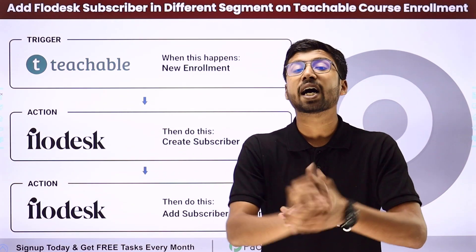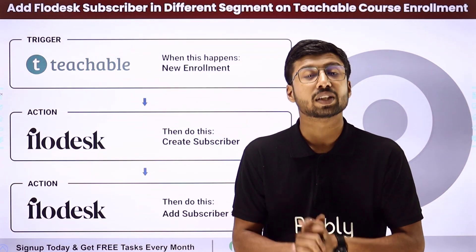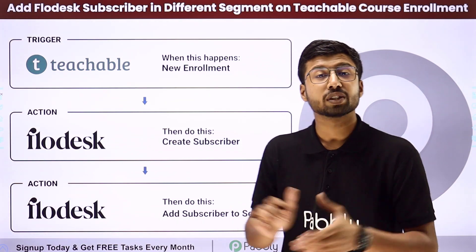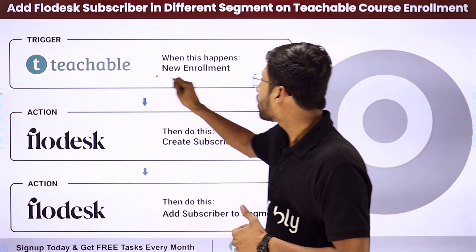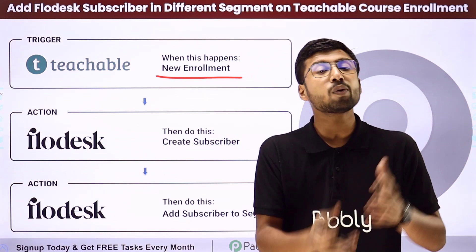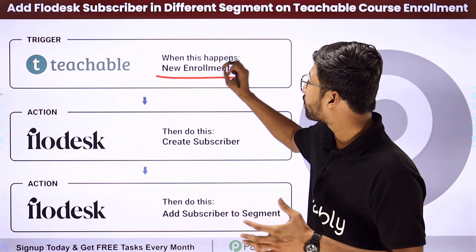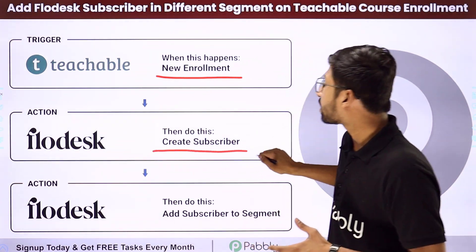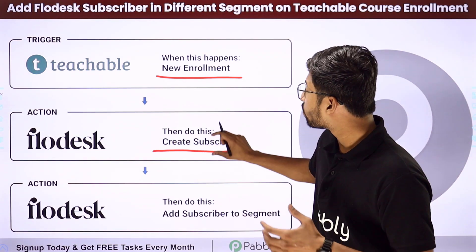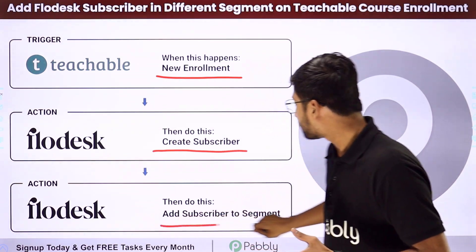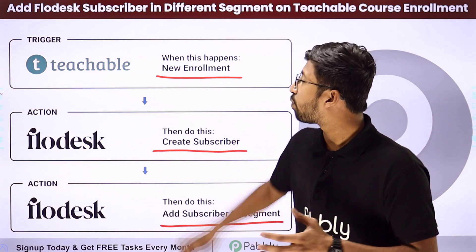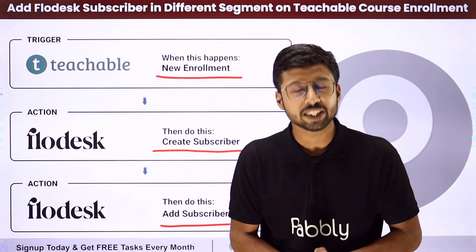You can automate this complete process with the help of Pabbly Connect. We are going to set up an automation so that whenever a new enrollment happens in your Teachable account, automatically that student will be added as a subscriber in Flodesk and placed into a specific segment based on the course they enrolled in.